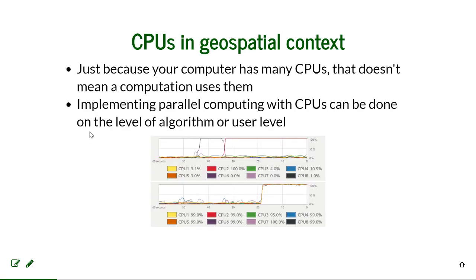Then we have clusters with nodes, where each node can have multiple CPUs or multiple GPUs. You multiply the number of CPUs per node by the number of nodes, and there can be hundreds of nodes on a cluster. Some of these terms can get mixed up, so I may not be explaining them with perfect technical precision, but it should be sufficient for this class.